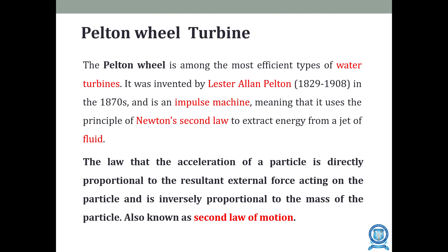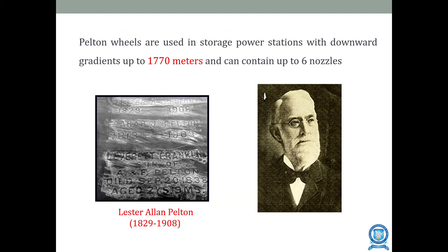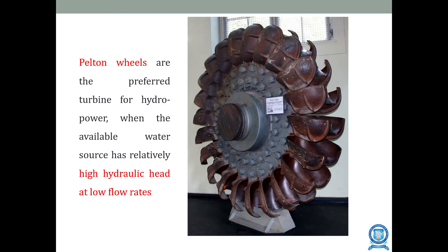The Pelton wheel is one of the most efficient types of water turbines, invented by Lester Alan Pelton. It is an impulse machine, meaning it uses the principle of Newton's second law to extract energy from a jet of fluid. Newton's second law states that the acceleration of a particle is directly proportional to the resultant external force and inversely proportional to the mass of the particle. Pelton wheels are used in storage power stations with gradients up to 1070 meters and can contain up to 6 nozzles. They are the preferred turbine for hydropower at high hydraulic head and low flow rates.